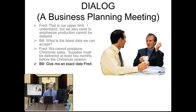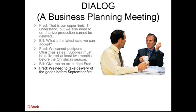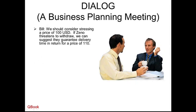Bill says, 'Give me an exact date.' We're making the goals clearer and clearer — more specific, less general. Fred says, 'We need to take delivery of the goods before September 1st.' So now we're very specific. Bill says, 'We should consider stressing a price of 100 USD. If Xeno threatens to withdraw, we can suggest they guarantee delivery in time in return for a price of 110.'